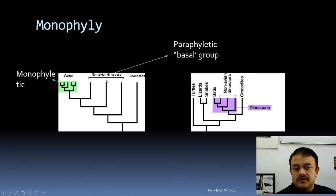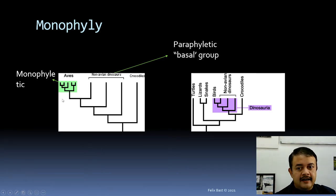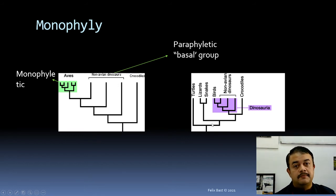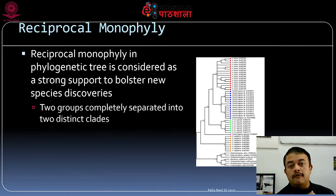For example, Aves (birds) is a monophyletic group. Non-avian dinosaurs form a paraphyletic group because Aves is excluded from it. If you include Aves and crocodiles together, that is monophyletic. Reptilia as traditionally defined by zoologists is also paraphyletic because it excludes birds and certain dinosaurs — if birds and dinosaurs were included in Reptilia it would be monophyletic, but that is not how traditional zoologists use the term.